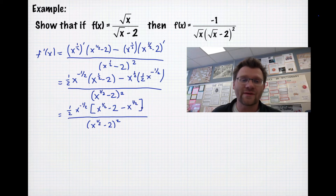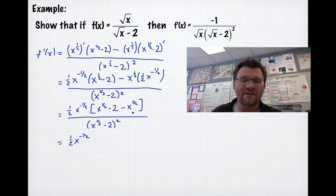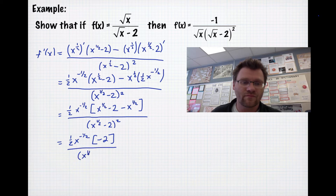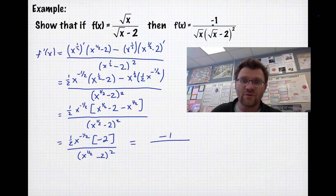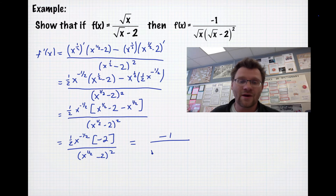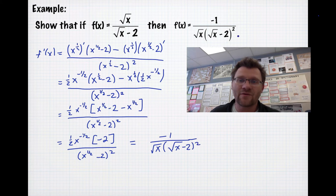We're very close to proving this. We have one half times x to the negative half, and inside the brackets x to the half minus x to the half is zero, leaving just negative 2. So one half times negative 2 gives us negative 1. And x to the negative half means root x is in the bottom, since a negative exponent means you flip it. So we get negative 1 over root x times root x minus 2 squared — exactly matching the given expression. We've shown the two derivatives are the same; you just need to know how to manipulate fractional and negative exponents.